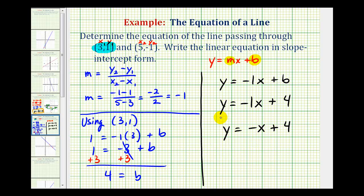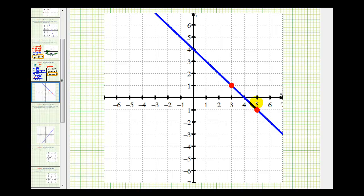Now, let's take a moment and verify this graphically. We were given these two points. This point had the coordinates (3,1). And, this point had the coordinates (5,-1).